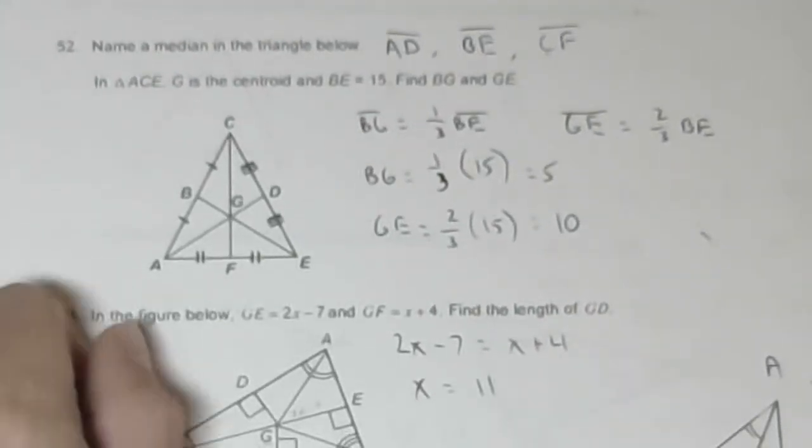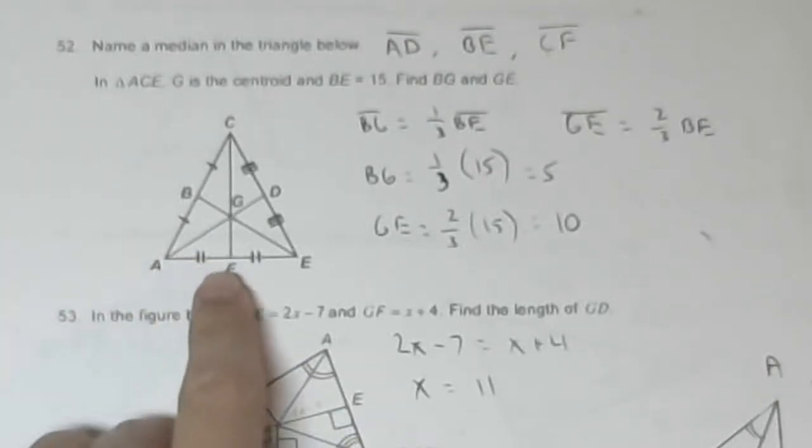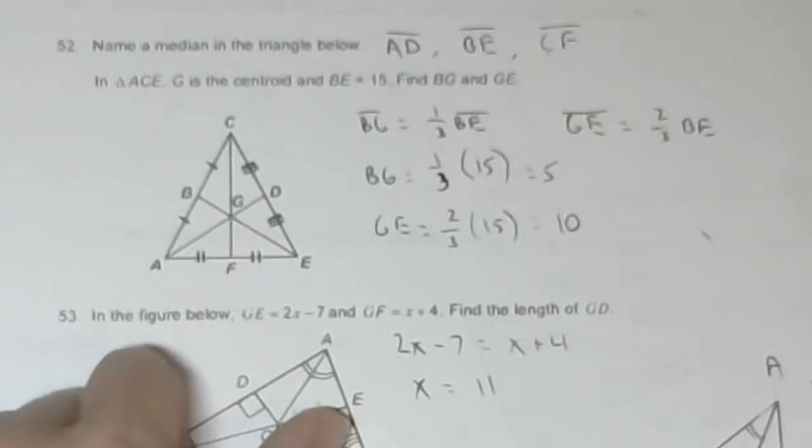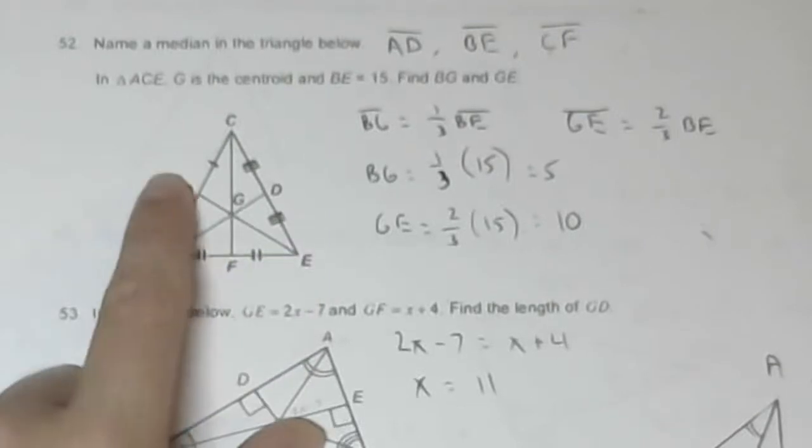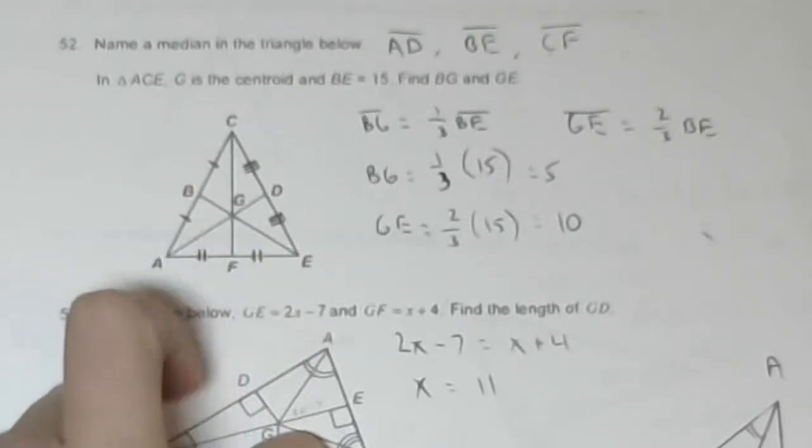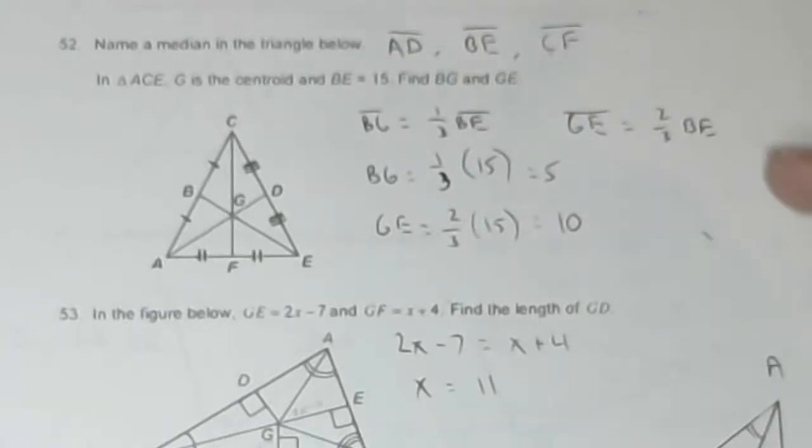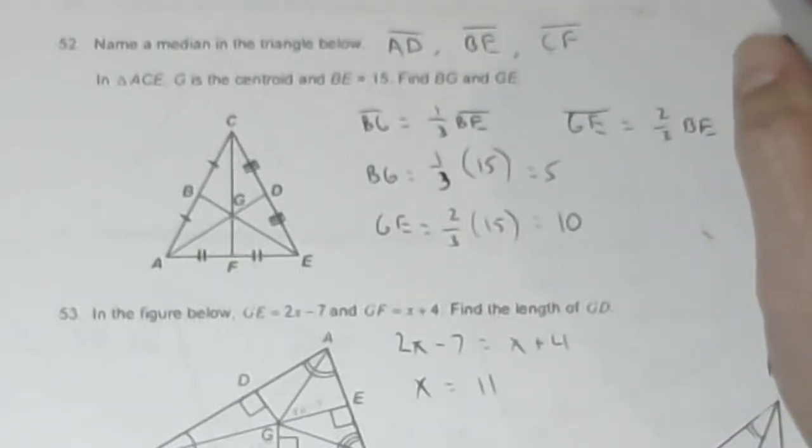Problem 52. Name a median in the triangle below. A median goes from a vertex to the midpoint of the opposite side. So AD, BE, and CF are all medians. In triangle ACE, G is a centroid and BE equals 15.